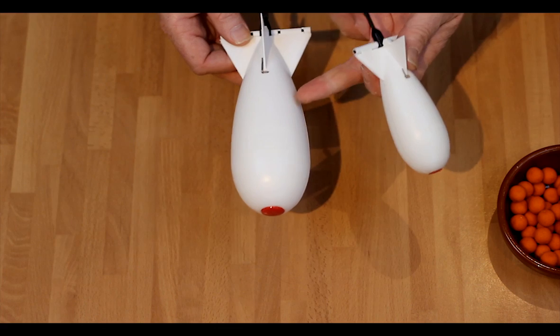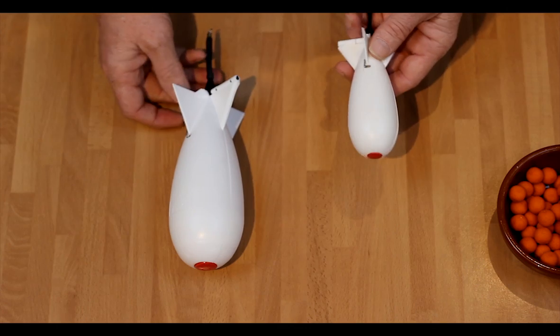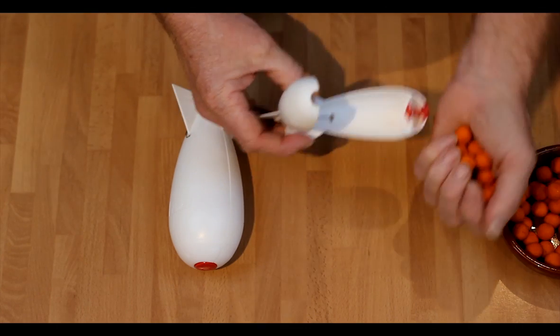So this takes 60 15mm boilies. The new one takes 15 15mm boilies. When you're loading the new smallest spomb,